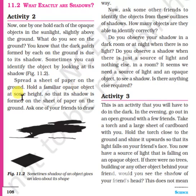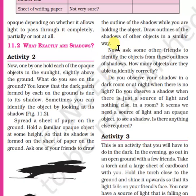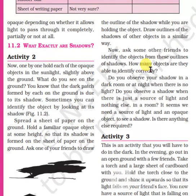Spread a sheet of paper on the ground. Hold a familiar opaque object at some height so that its shadow is formed on the sheet of paper. Ask one of your friends to draw the outline of the shadow while you are holding the object. Draw outlines of the shadows of other objects in a similar way. Now ask some other friends to identify the objects from these outlines of shadows.